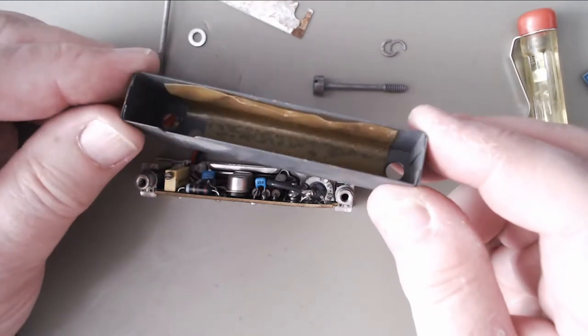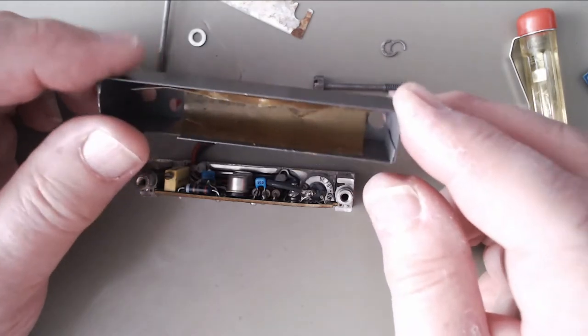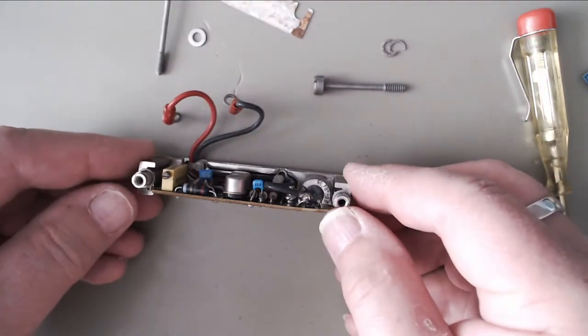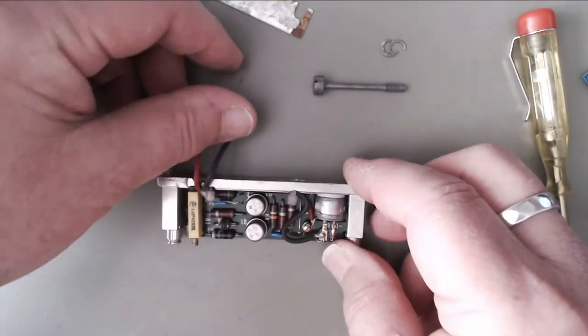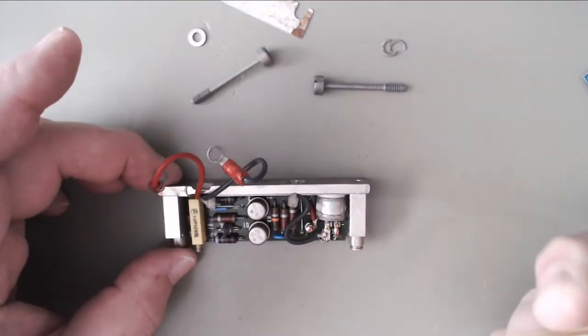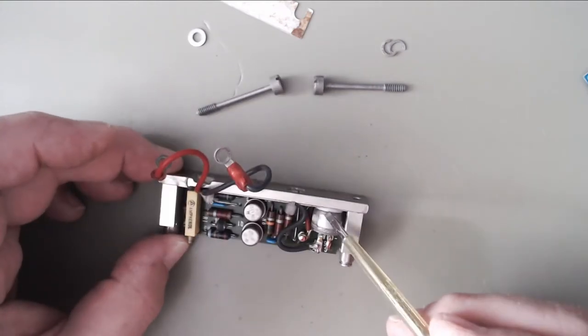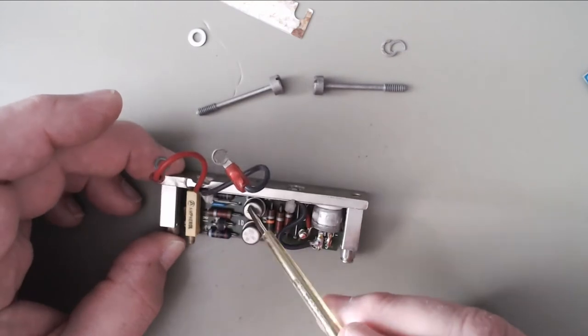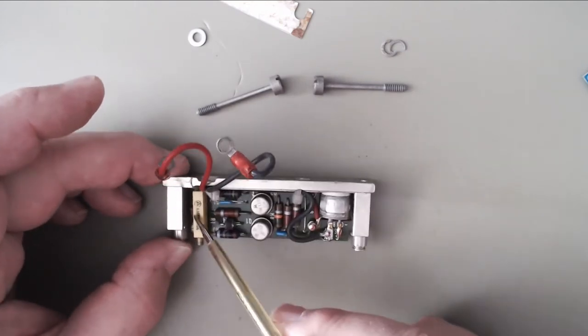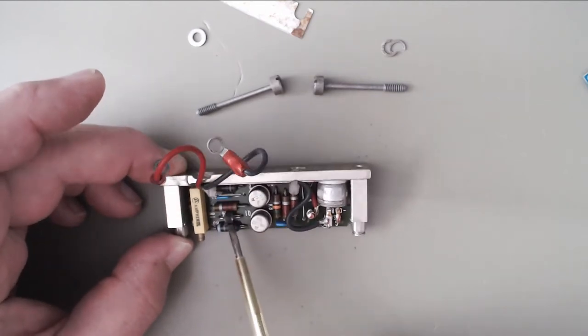Looks like a little bit of fiberglass sheet in there for insulation. Here we have the SCR Q1, Q2, the adjustment pot, looks like the thermistor down there.